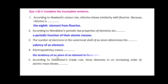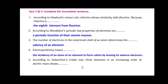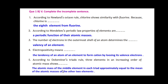Electropositivity means the tendency of an element to form a cation by losing its valence electrons. According to Dobereiner's Triad rule, three elements arranged in increasing order of their atomic mass show that the atomic mass of the middle element in each triad is approximately equal to the mean of the atomic masses of the other two elements.